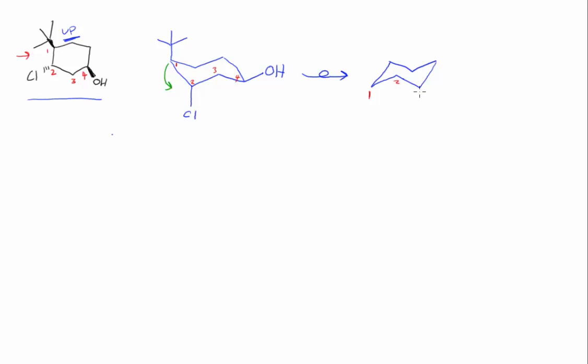I think that's counterclockwise. We get these numbers. And now for carbon one, we have an upward-facing t-butyl group. Now upward-facing means it's on the equatorial bond.